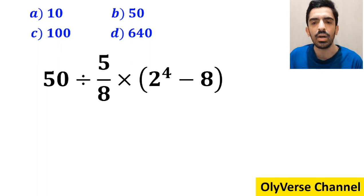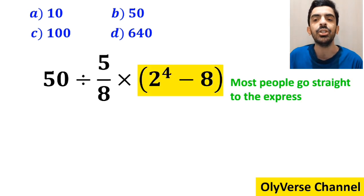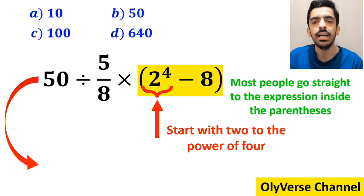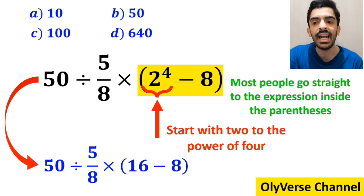The first step of solving this question, most people go straight to the expression inside the parenthesis and start with 2 to the power of 4. So instead of the original expression, they write 50 divided by 5 over 8 times 16 minus 8 inside the parenthesis.